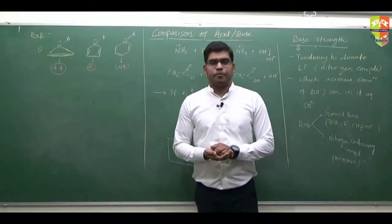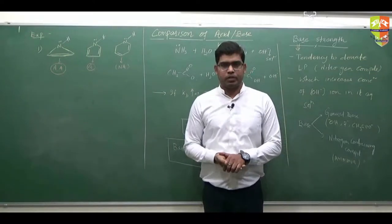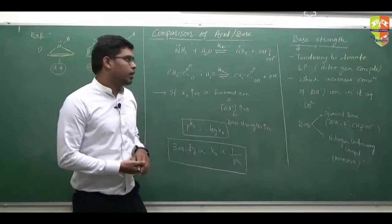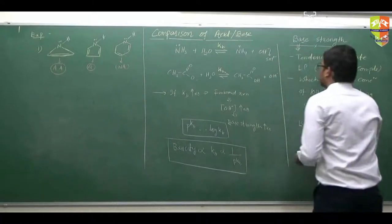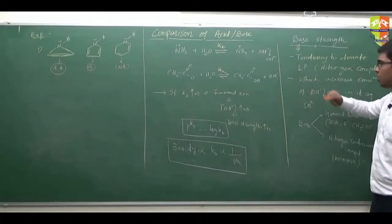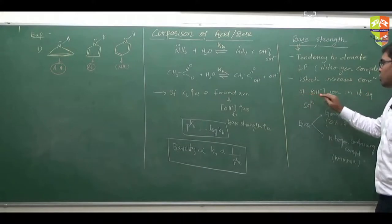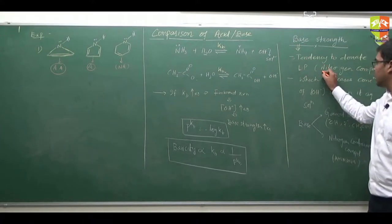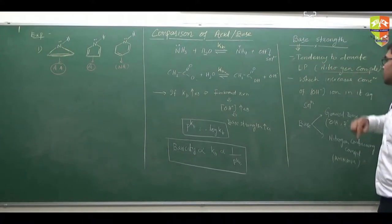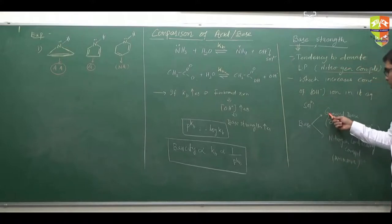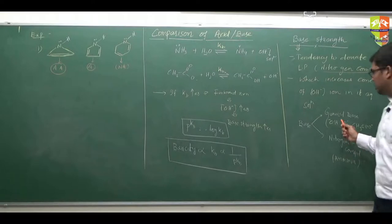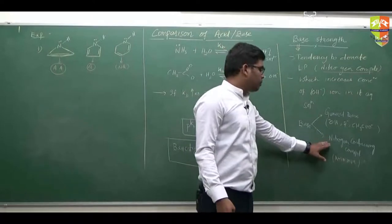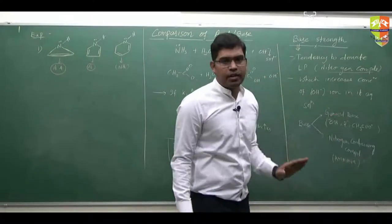Today in this session, we are going to discuss base strength. I have already discussed this in the previous classes. Base strength is defined by two types: tendency to donate lone pair, or which can increase concentration of OH minus ion in its aqueous solution. This definition is generally used for nitrogen-containing compounds. Bases are classified into two categories: general base and nitrogen-containing compound. Nitrogen-containing compounds like ammonia and its derivatives we will discuss here.